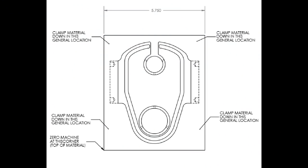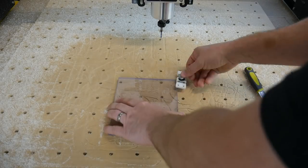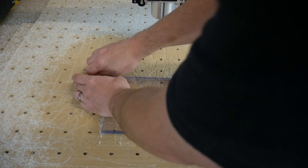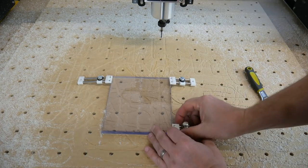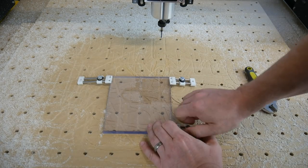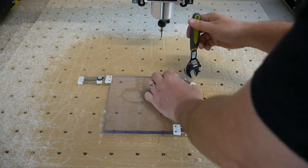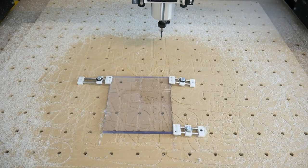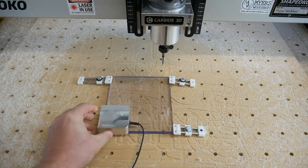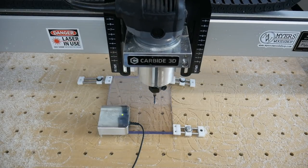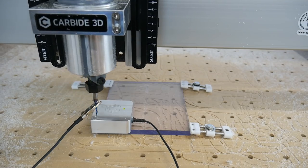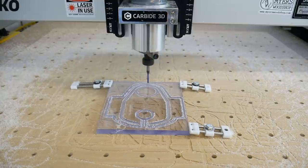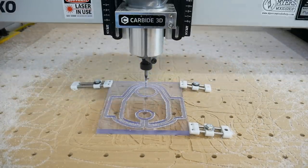Finally, we'll cut out the dust shoe. Take notice of the clamp position one last time. And this is cutting out the dust shoe at a hundred times speed.